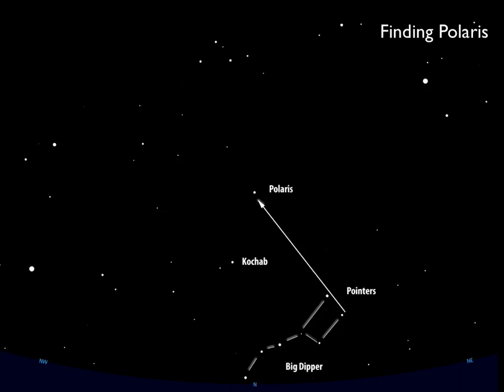An easy way to find it is through the Big Dipper. You can use the two end stars of the Dipper as pointer stars to find Polaris. Another helpful thing to know is how far up from the horizon you might expect to see it.